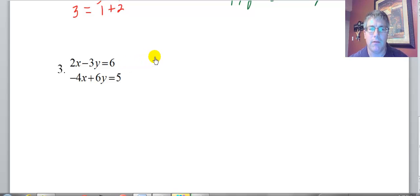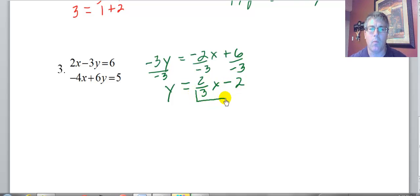So I'm going to rewrite the top one. Negative 3y equals negative 2x plus 6. I subtract 2x from both sides. I'm going to divide both sides by negative 3. And I'm going to get y equals 2 thirds x minus 2. So now I know what y is. Y is 2 thirds x minus 2, and I have to substitute that into the other equation.